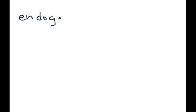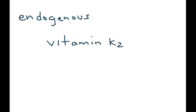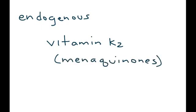The next is the endogenous form — the form of vitamin K that is produced by your body — vitamin K2, also known as menaquinones. This form is synthesized by the bacteria in the intestinal tract.